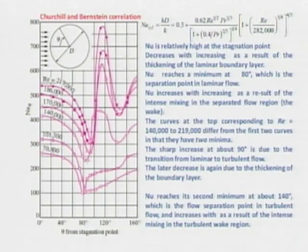This minimum value is roughly at about theta equal to 80 degrees, where separation point in laminar flow occurs. What is flow separation?